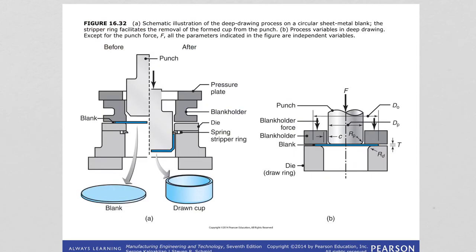Deep drawing forces a flat sheet metal blank into a die cavity. As you can see here, you start with a blank, and the process is shown before and after — after it looks like a cup. You are forming the sheet blank into a cup like this. So the deep drawing process takes the flat blank and forms it into a cup shape.